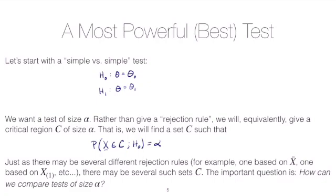The problem is that there are many tests of size alpha. So there are many critical regions C that would satisfy this criterion. So the important question for us is how can we compare tests of size alpha? What does it mean to say that one test of size alpha is better than another test of size alpha?